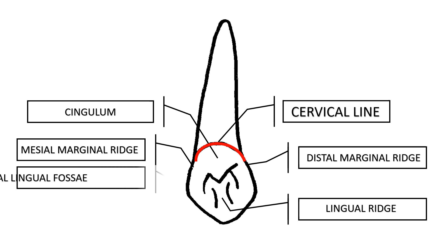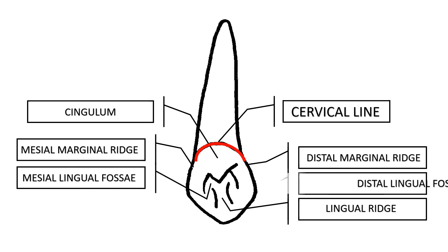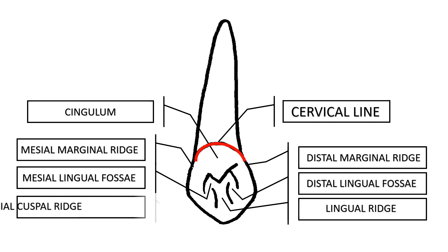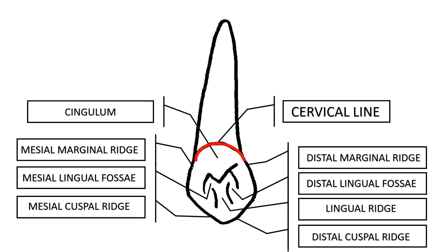Concavities: The lingual aspect of canines shows a concavity called the lingual fossa, which is more pronounced than those of other anterior teeth. The lingual fossa is divided into mesial and distal lingual fossa by the lingual ridge. The root is narrower lingually and much of the mesial and distal surfaces can be seen.